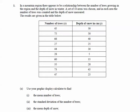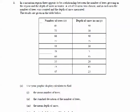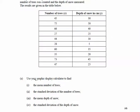The first thing it asks us to do — not relating to Pearson's or linear regression just yet — is to work out these four things: the mean number of trees, the standard deviation of the number of trees, the mean depth of snow, and the standard deviation of depth of snow. We're going to do all of that on the calculator.